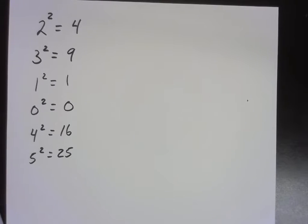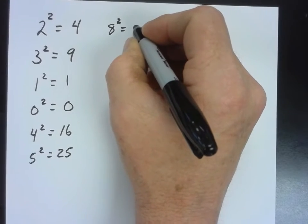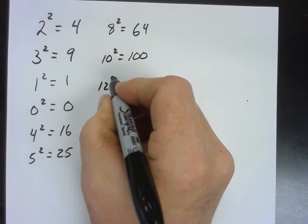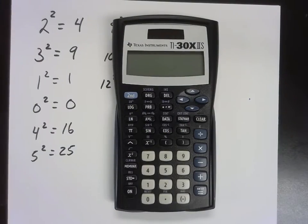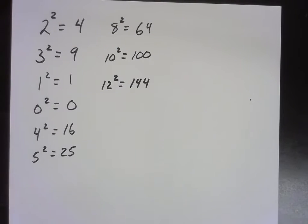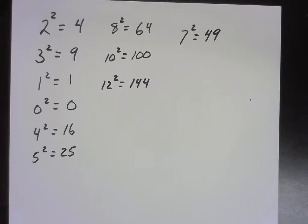So that's the idea when we're squaring things or raising them to the second power. You guys know most of these — 8 squared, 10 squared is 100, 12 squared. A lot of times when they get really high calculators are fantastic, although anything up to 12 squared you can do. Those were the fun ones to memorize from your times tables — like 7 times 7, 7 squared.